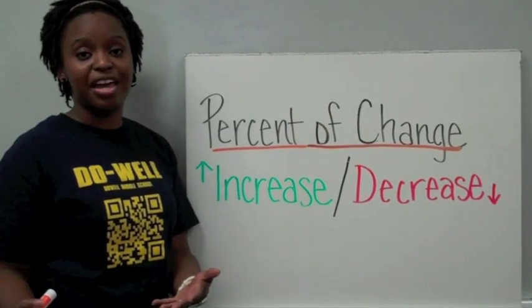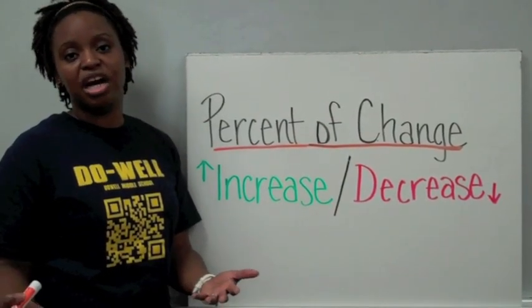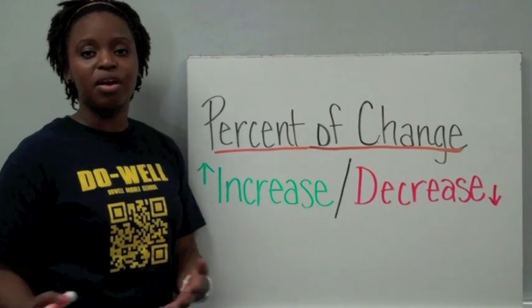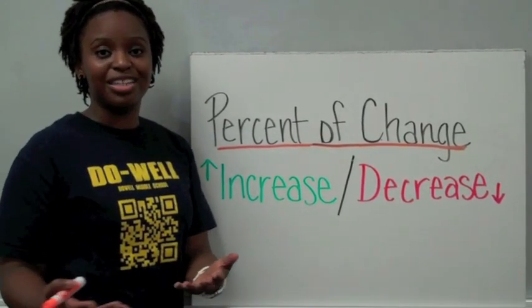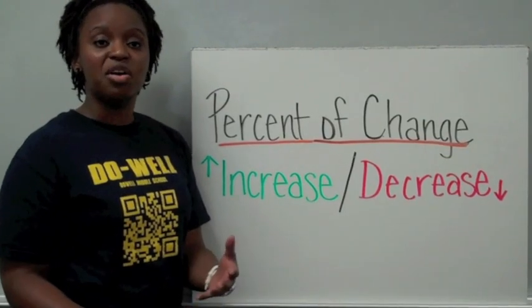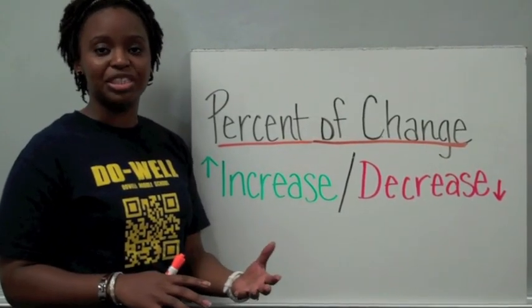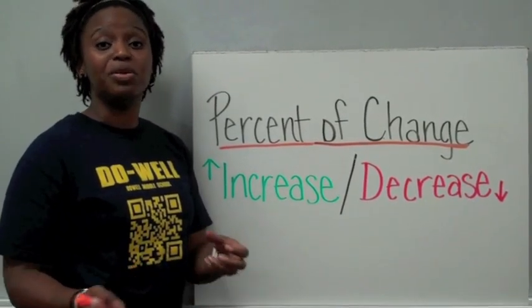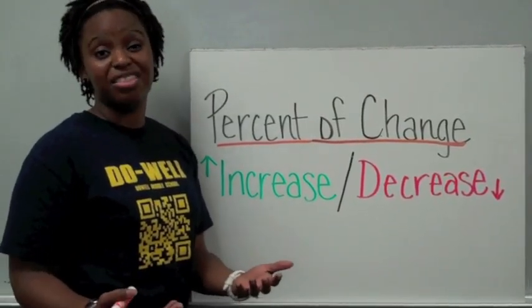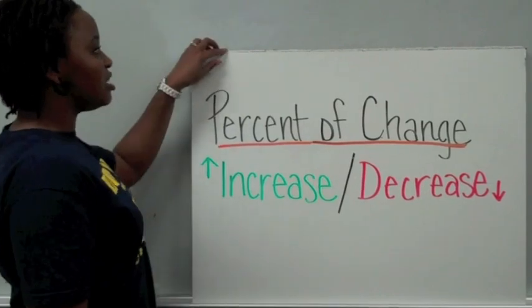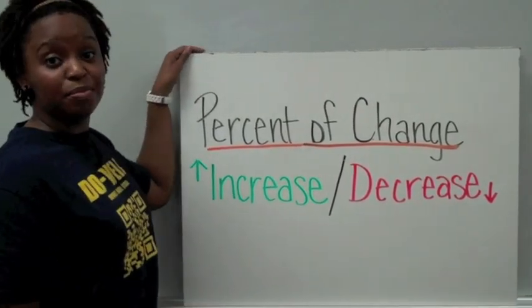A recent example may be the fact that the new iPhone just came out. So you've got the iPhone 4S that probably sells with a new contract for $200. Well, the old iPhone, the iPhone 4, that used to sell for $200 is now only $100. And so we know that it decreased by $100, but we might want to know the percent that it decreased so that the manufacturer could figure out more about their sales. So let's go ahead and get into how we find percent of change.